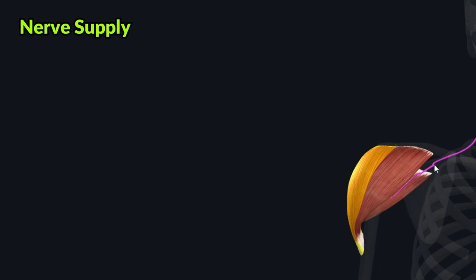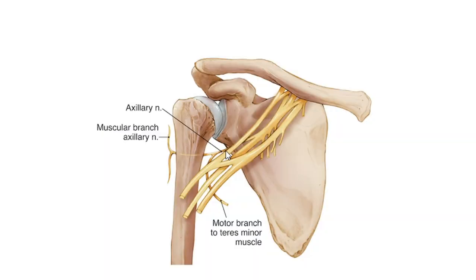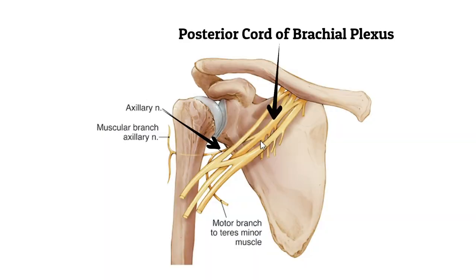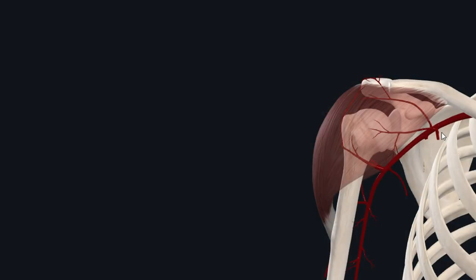In terms of the nerve supply of the deltoid muscle, this muscle is supplied by the axillary nerve. The axillary nerve arises from the posterior cord of the brachial plexus with C5 and C6 cervical nerve roots.